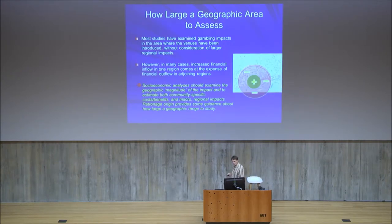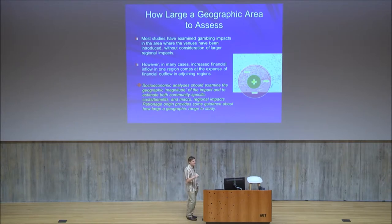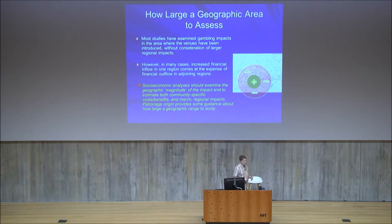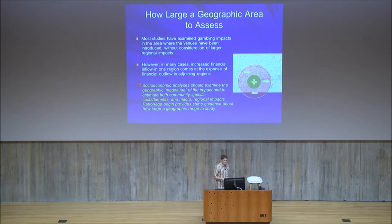How large a geographic area to assess — most socioeconomic impact studies make the mistake of focusing on the very specific area where gambling is provided, and they may see an increase in jobs and revenue. But for the most part, gambling usually involves a fairly sterile transfer of wealth, and the economic gains in one jurisdiction are usually at the economic expense of neighboring jurisdictions. So you need to take a more macro view of the impacts.